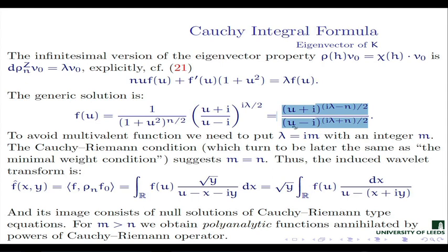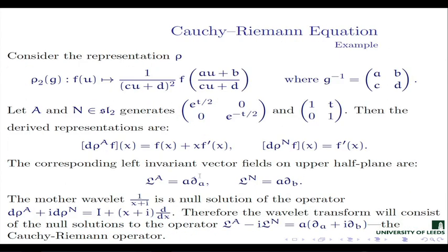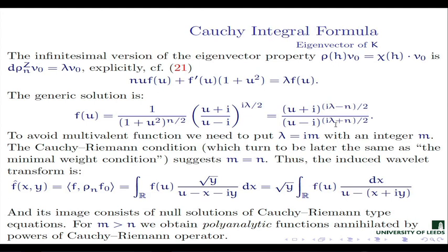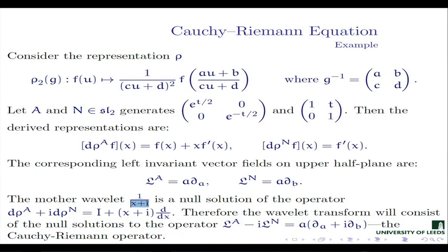So our wavelet transform with such a function will be a transformation from the real line to the upper half-plane, coming out of the properties of the group and that integral transform. But here, if you put an additional condition — that you want the image to consist of functions annihilated by something — then you use the differential operator from the previous identity. And looking at what it means here, it is exactly the condition m equal to n.